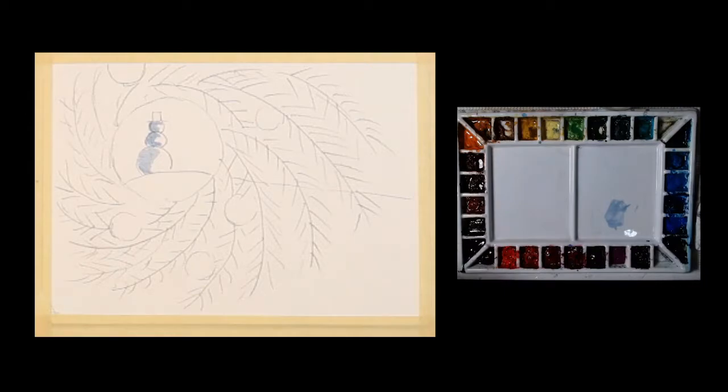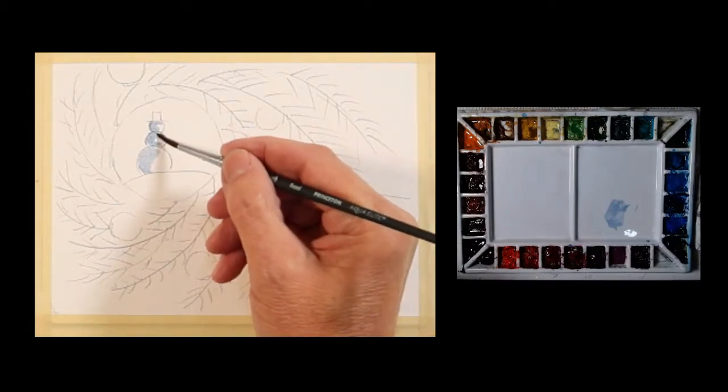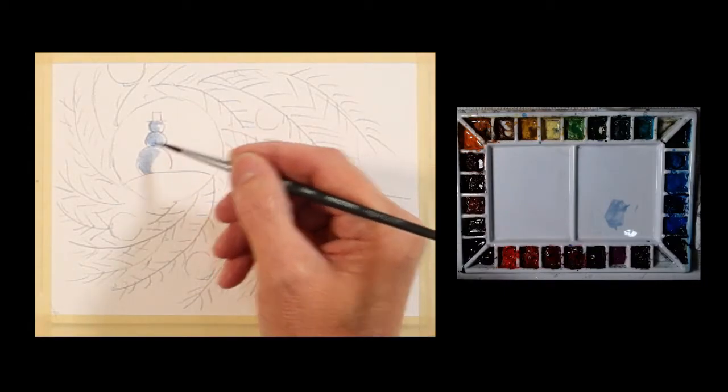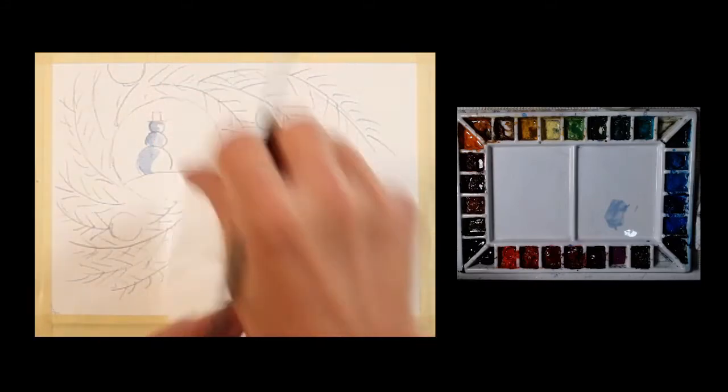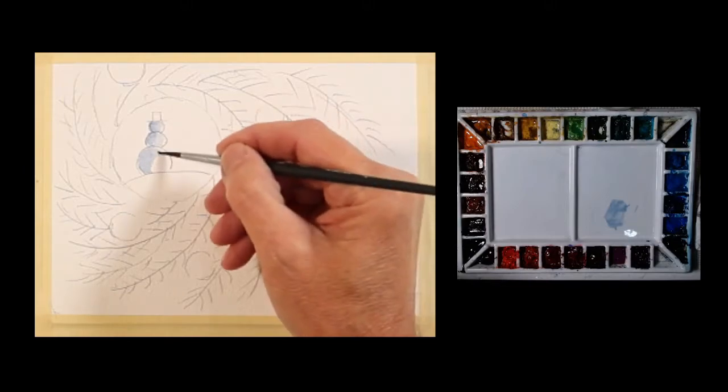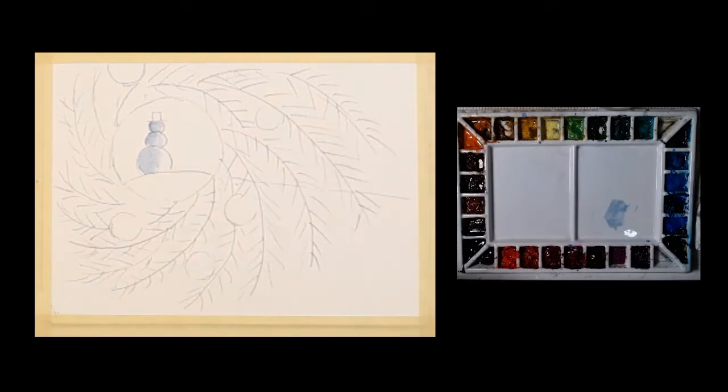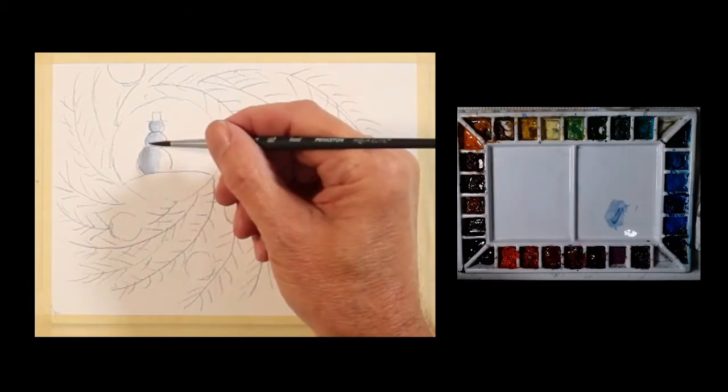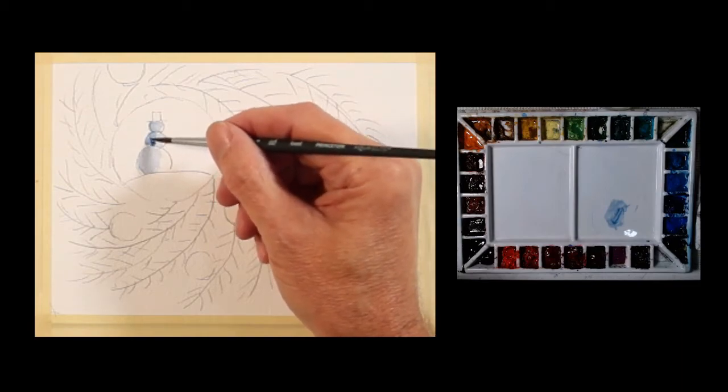I'll use a little bit of water to soften the transition of that shape. So just a snowman there. I'm going to get a little more pigment and get darker on the back.